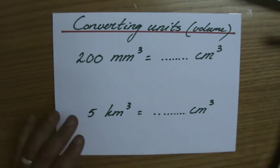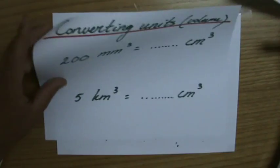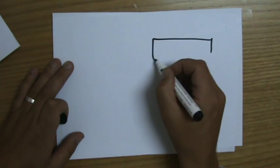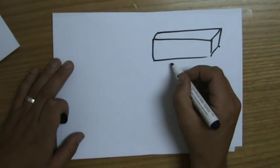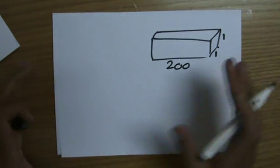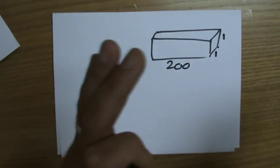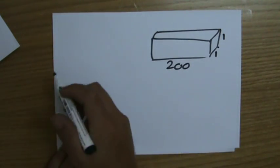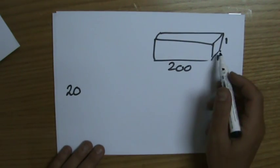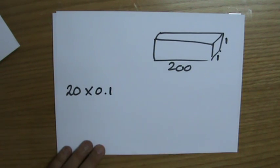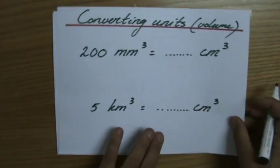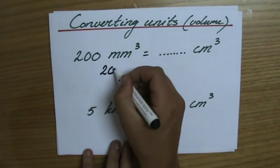First question: 200 millimetre cube — how many centimetre cubes will fit inside? I'm going to do this relatively quickly, so make sure you've seen the previous videos first. I'll sketch a cuboid of 200 by 1 by 1. Converting millimetres to centimetres: 200 millimetres is 20 centimetres, and 1 millimetre is 0.1 centimetres.